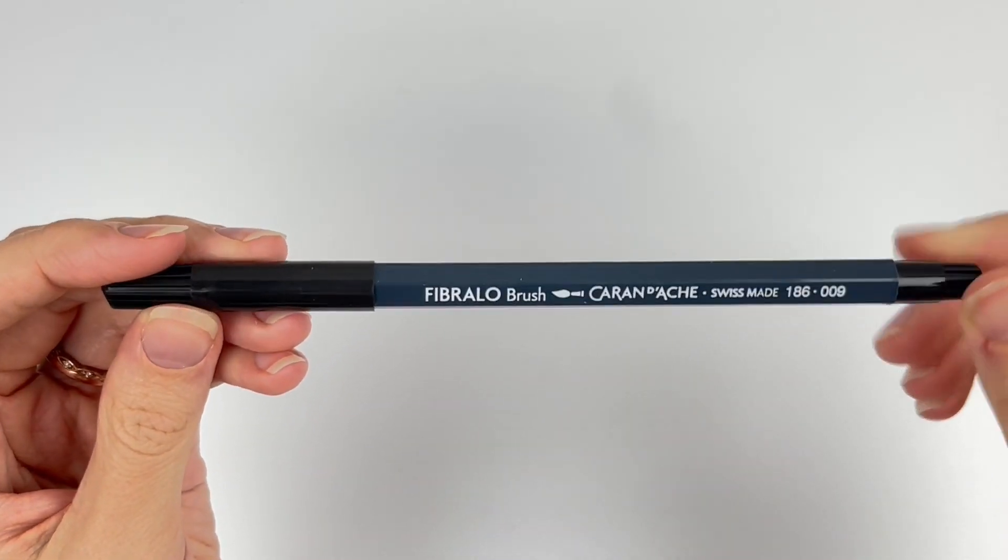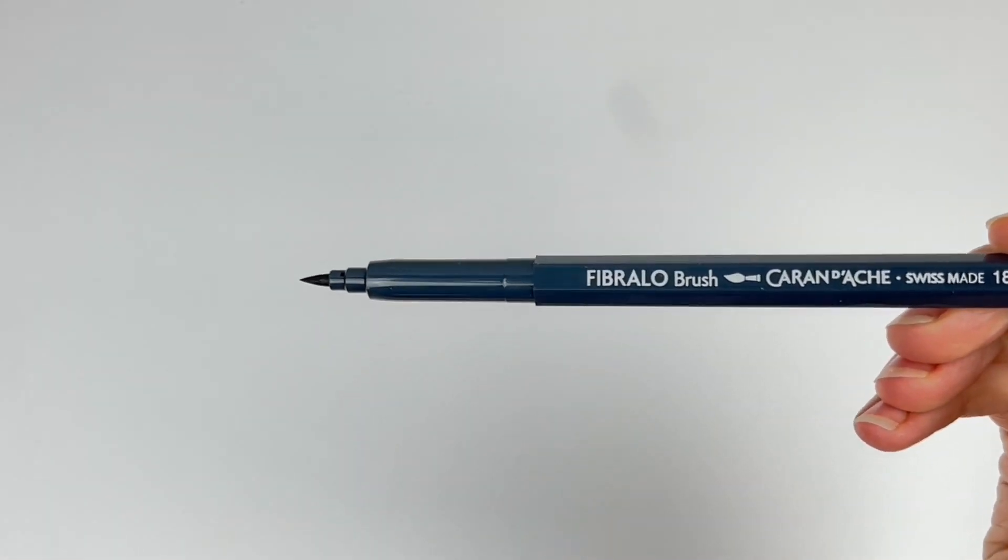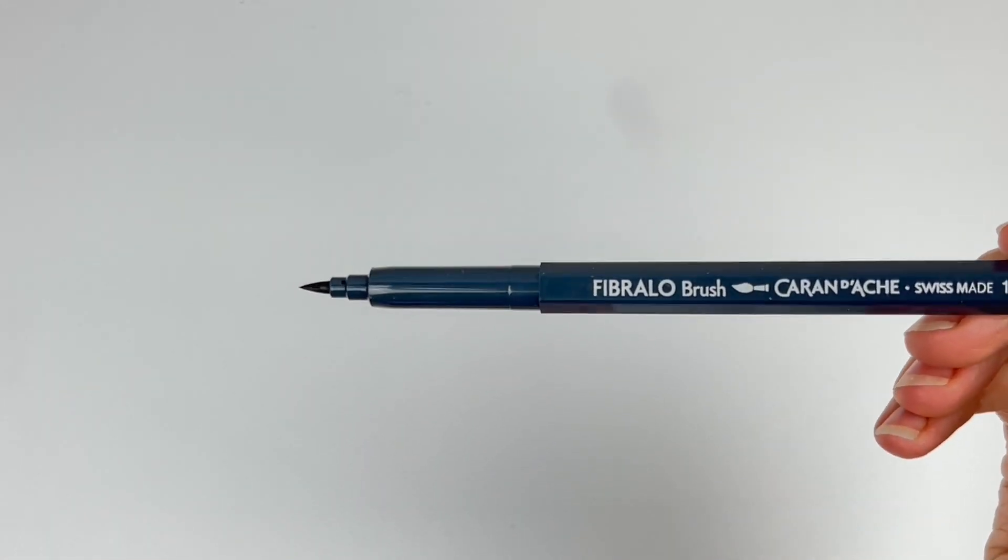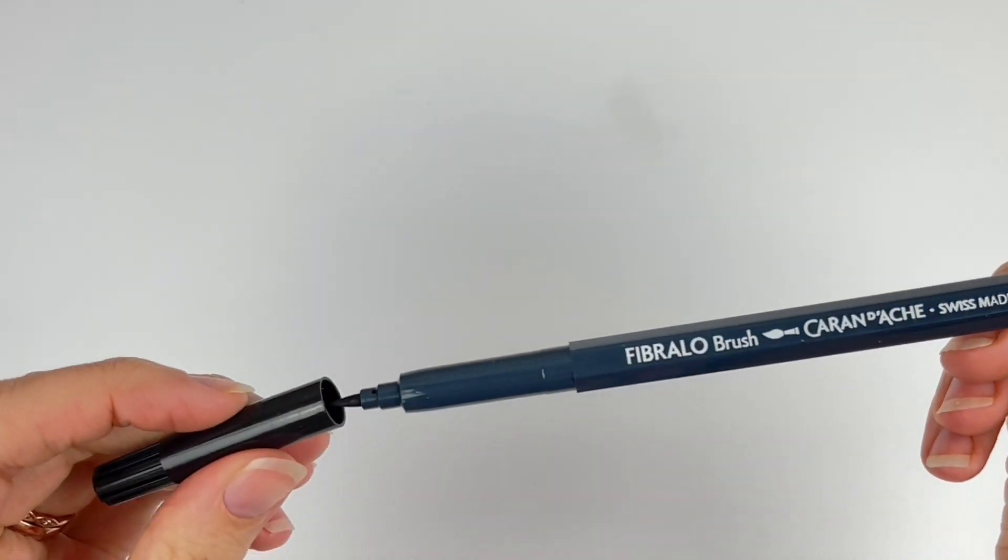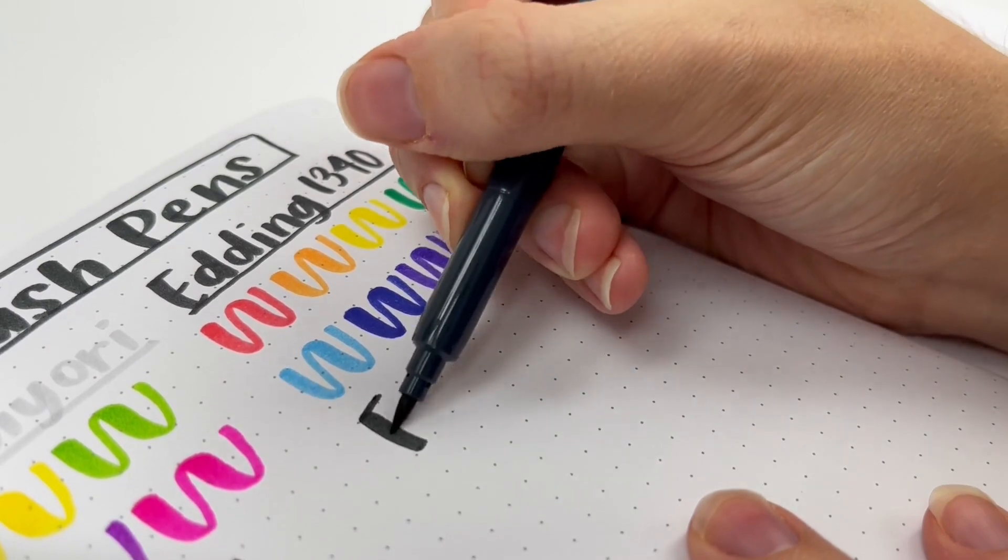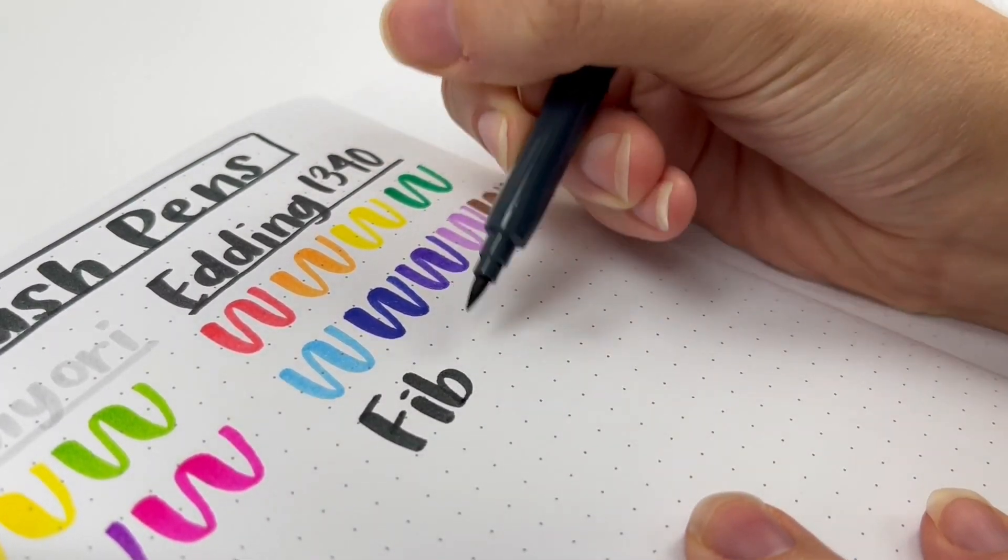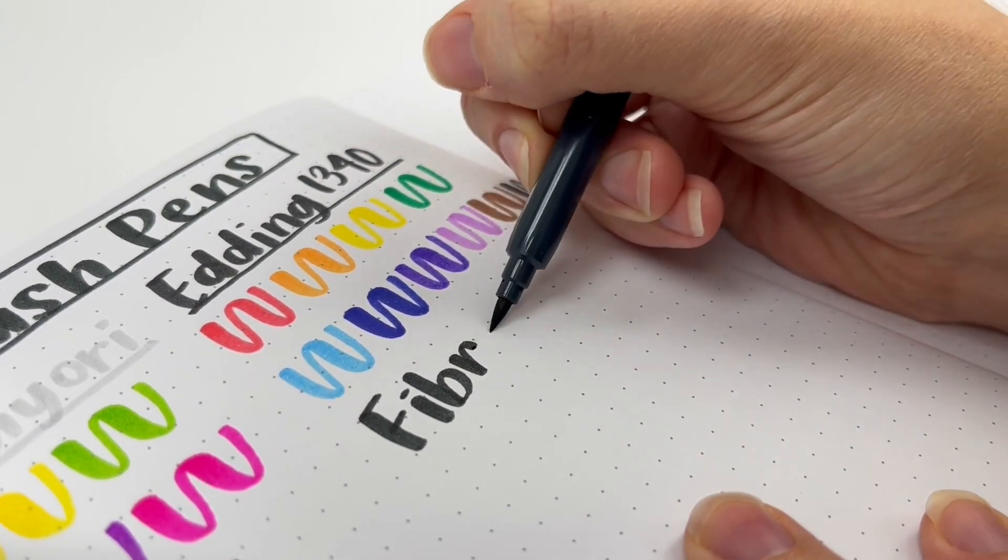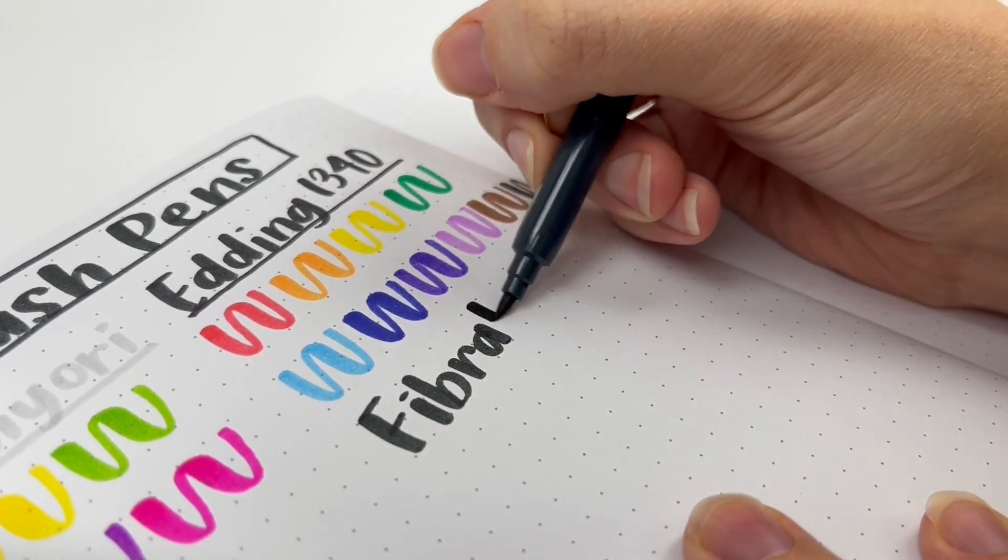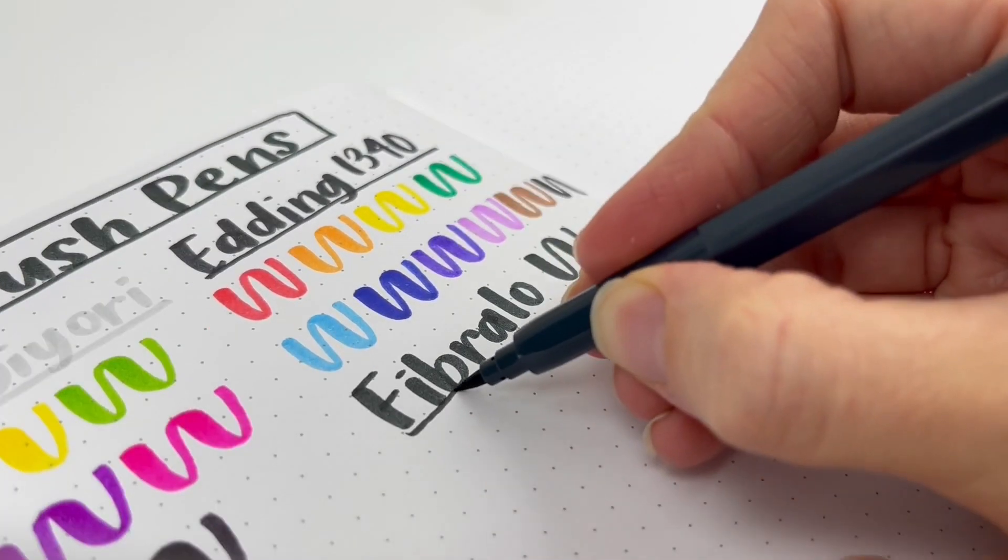Here we have the Caran d'Ache Fibralo Brush Pen. I only have the black one. I think I got it from Jet Pens because they have them in individual colors. You can get the full set with lots of colors on Amazon as well. This brush pen has such a good bounce. It's easy to control with that smaller tip, and I love how it makes my lettering feel. But I might have to send it on because I have other black medium tip pens that I love just the same.